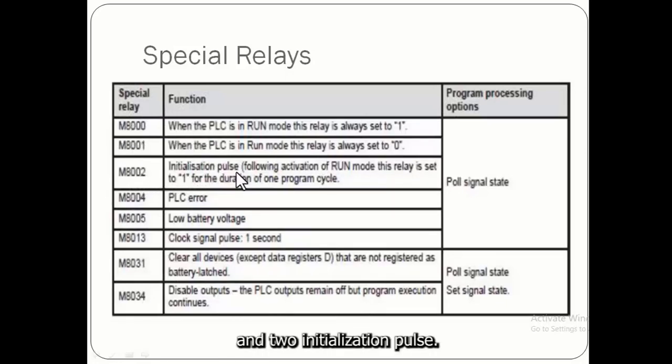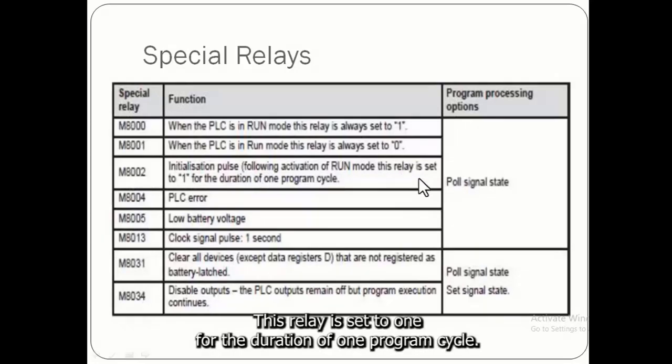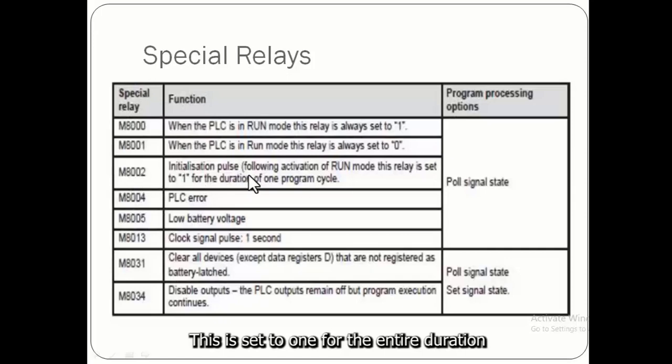M8002 initialization pulse. Following activation of run mode, this relay is set to 1 for the duration of one program cycle.